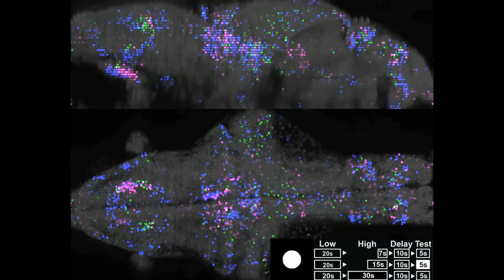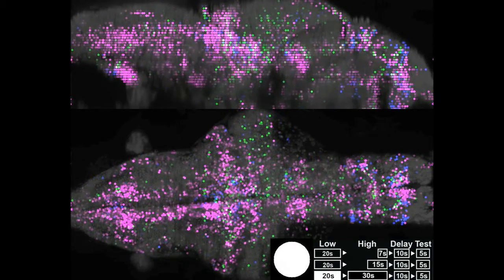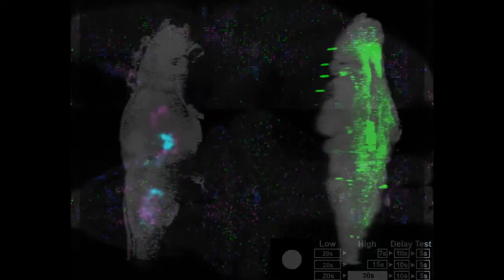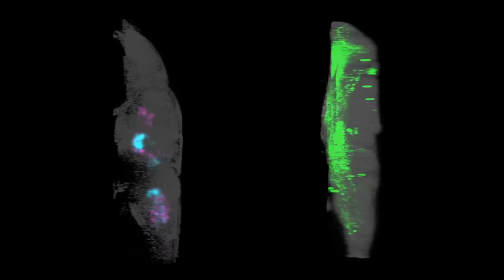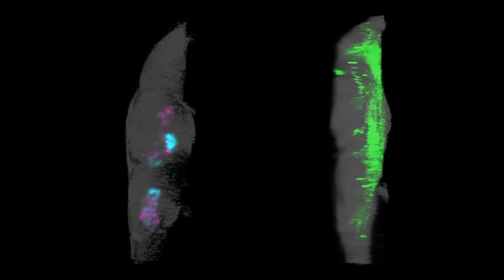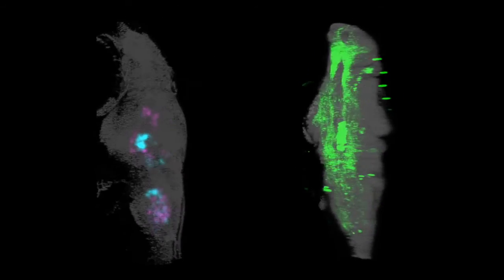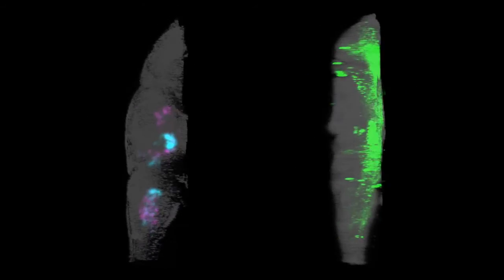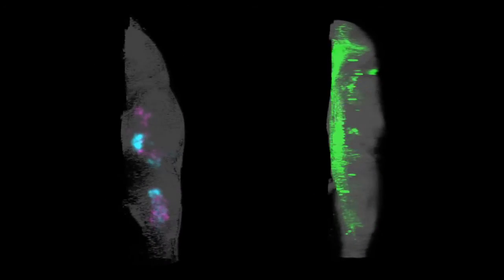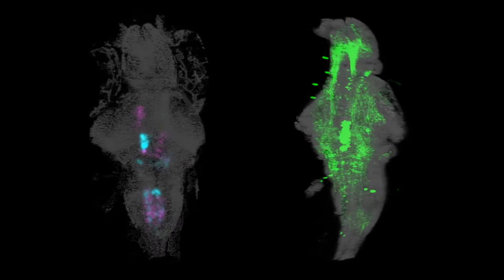We found such neurons in a place we didn't expect, the dorsal raphae nucleus. This nucleus is a major serotonergic center in the vertebrate brain. Since it is often associated with emotive processes, it was surprising to us that this neuromodulatory center is directly involved in this short-term motor learning.